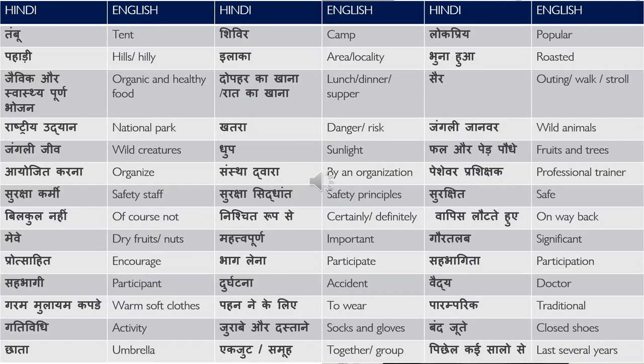The first word is तम्बू — tent. शिविर — camp. लोकप्रिय — that is popular. This is a very important word repeated in a lot of dialogues, saying that this is a very popular tourist spot or a popular sightseeing area. So you should know the translation: लोकप्रिय means popular. पहाड़ी — hills, or पहाड़ी इलाका — hilly area or locality.